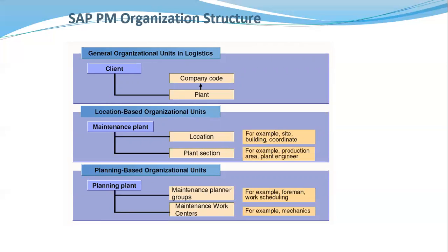The plant is defined as an organizational logistics unit that structures the enterprise from the perspective of production, procurement, maintenance, and materials planning. Maintenance plants are plants where maintenance activities are carried out. The planning plant is a plant where maintenance tasks and activities are planned and prepared.